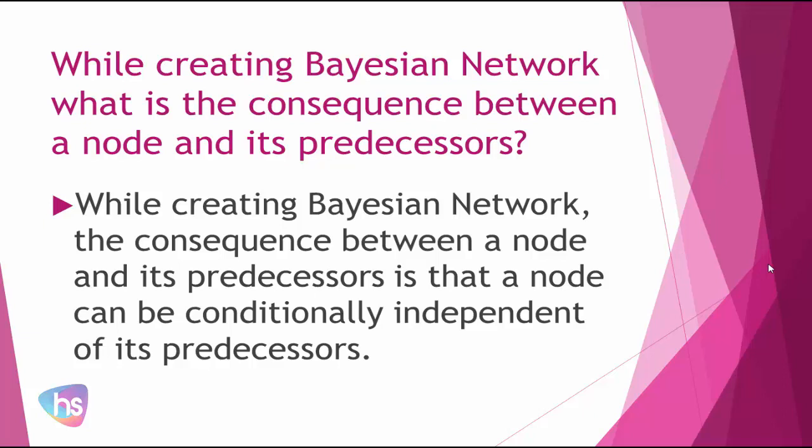The next question: while creating a Bayes network, what is the consequence between a node and its predecessors? While creating a Bayes network, the consequence between a node and its predecessors is that a node can be conditionally independent of its predecessors once we are implementing the Bayes network.